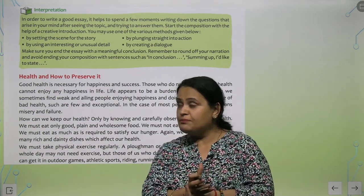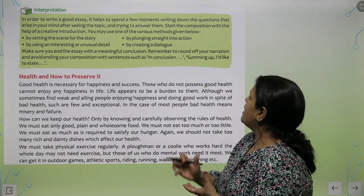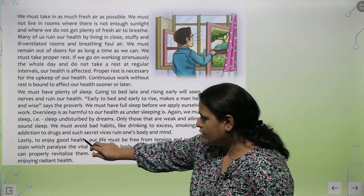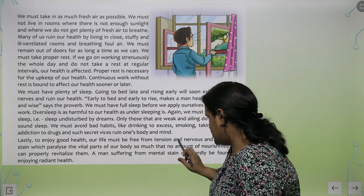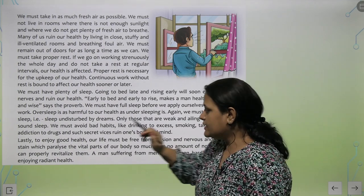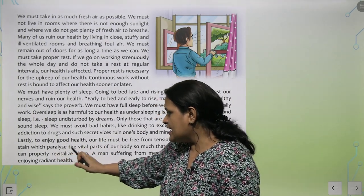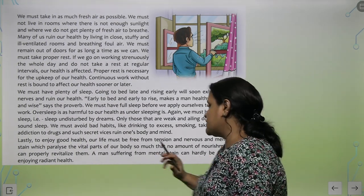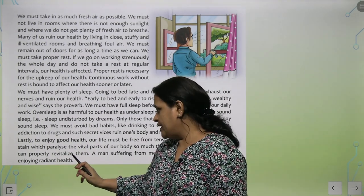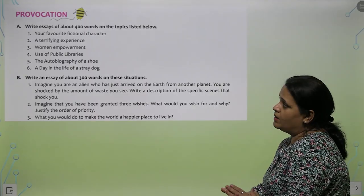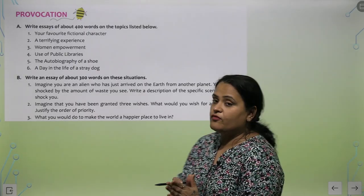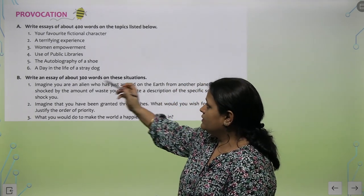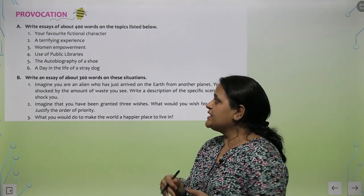Remember to round off your narration. For example: 'To enjoy good health, our life must be free from tension and nervous and mental strain which paralyze the vital parts of our body, so much that no amount of nourishment can properly revitalize them.' Now write essays of about 400 words on the topics listed below — I request you to choose any topic and try to write a good essay.